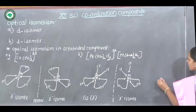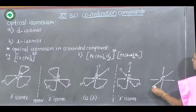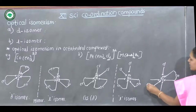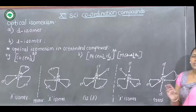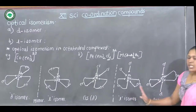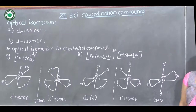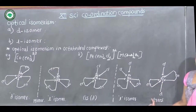The trans isomer has identical ligands at the 1,4 positions — Cl, Cl and ethylenediamine, ethylenediamine. The trans isomer does not show optical isomerism because it has a center of symmetry, making it optically inactive. It forms superimposable mirror images, so the trans isomer of this complex does not exhibit D and L isomers.